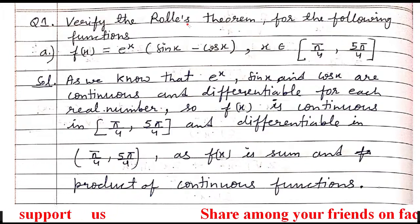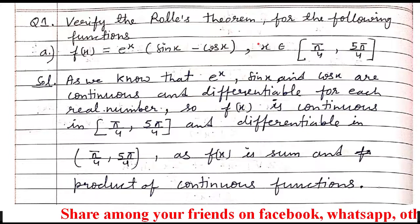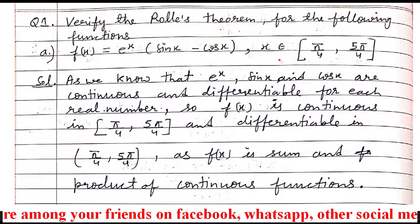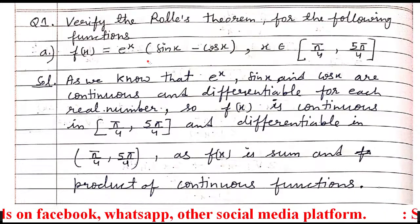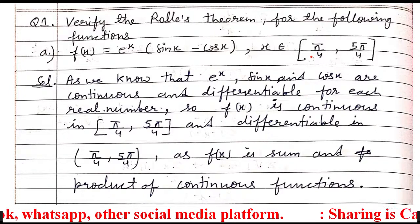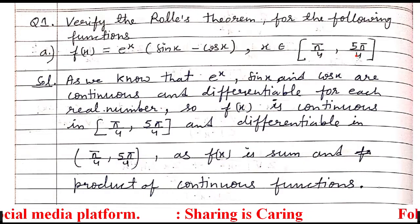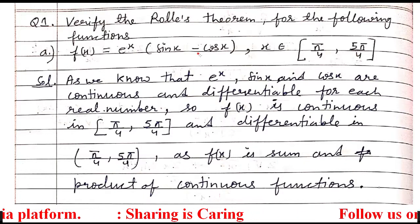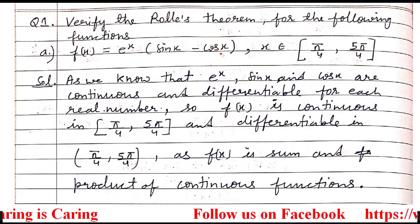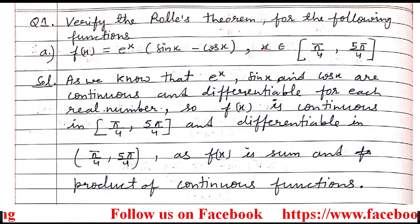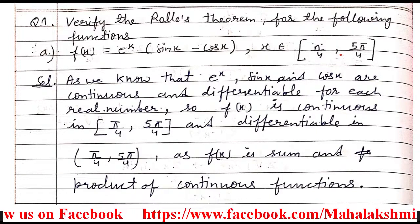In Rolle's theorem, there are mainly three conditions: the function should be continuous in the closed interval, the function should be differentiable in the open interval, and the function's value at the lower limit and at the upper limit should be the same. If any function satisfies these three conditions, then Rolle's theorem is applicable, and at some point c in between the interval, f dash c is going to be 0.